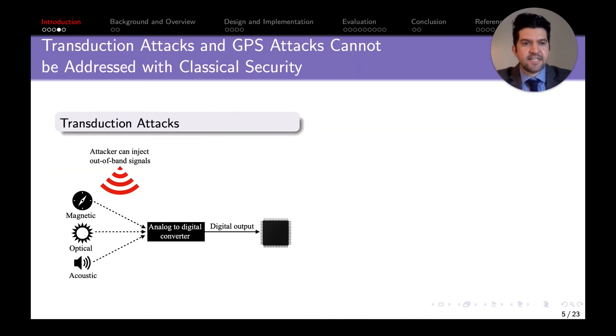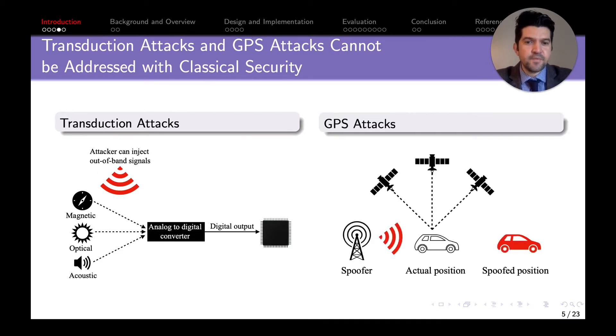When it comes to transduction attacks, these sensors measure actual analog signals in the real world. It could be magnetic, optical, or acoustic in order to make sense of the world. But these signals can be manipulated by an attacker by injecting outbound signals. When it comes to GPS spoofing, if a vehicle is getting GPS signal from satellites that is weak but also getting a spoof signal that is stronger, it's going to believe it's at a different location.